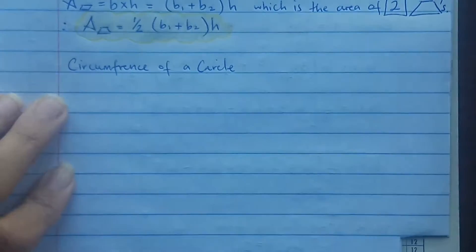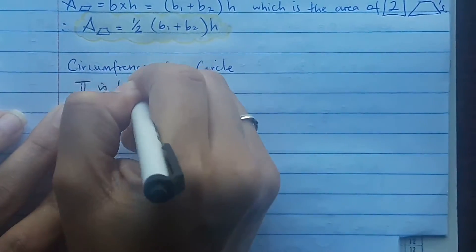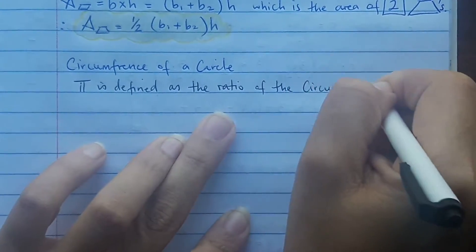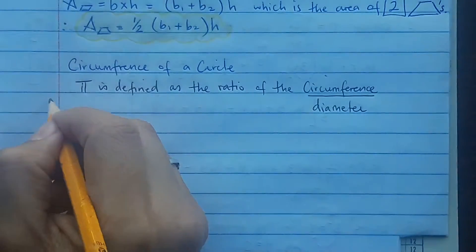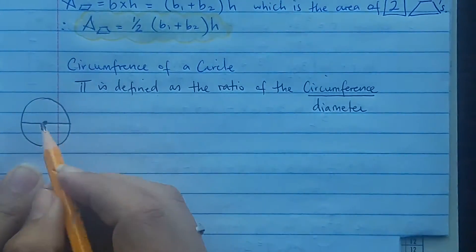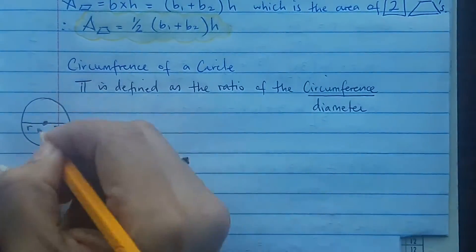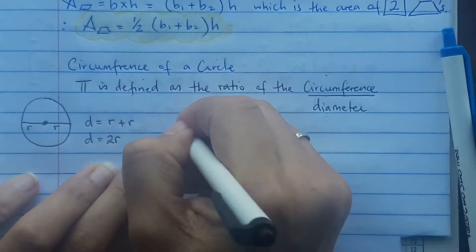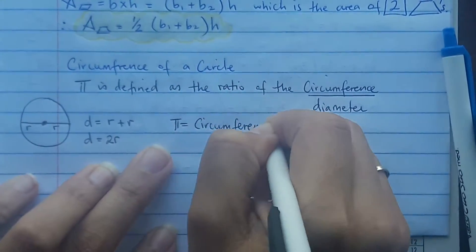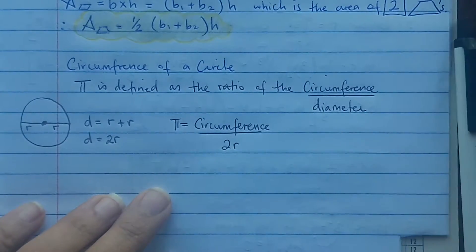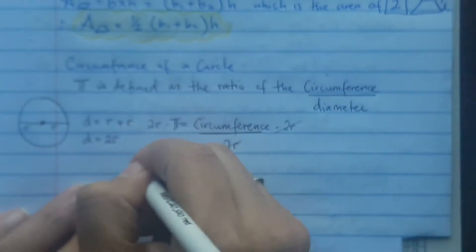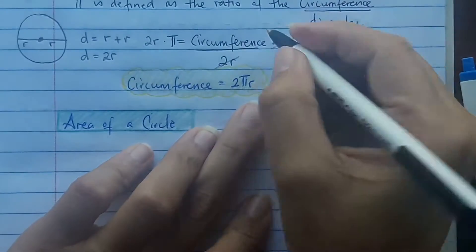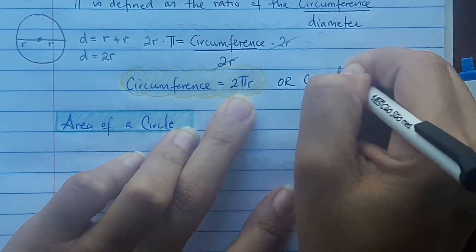Now we're going to take a look at the circumference of a circle. Circumference means the distance around the circle. Pi is defined as the ratio of the circumference to the diameter. The diameter is two radii, so the diameter equals 2r. Since pi equals circumference over diameter, we can substitute 2r for the diameter and multiply both sides by 2r to get circumference equals 2πr. Circumference is also written as πd, so either 2πr or πd, because 2r is the diameter.